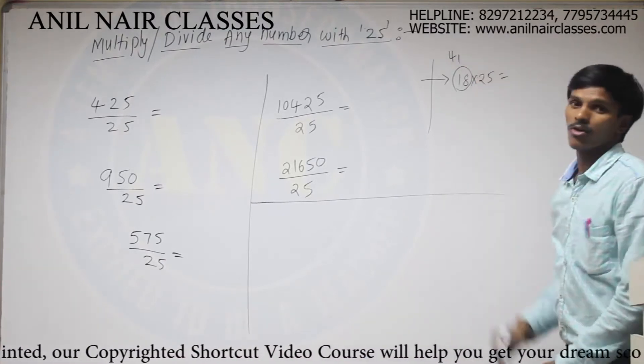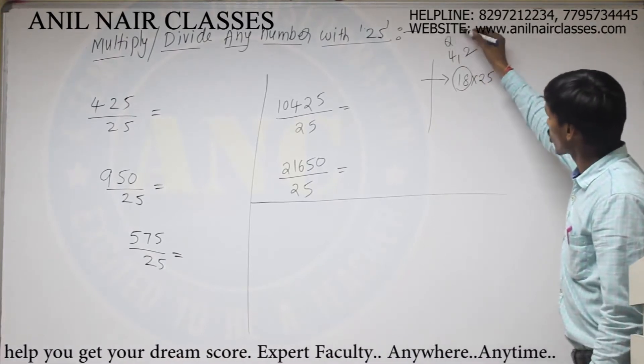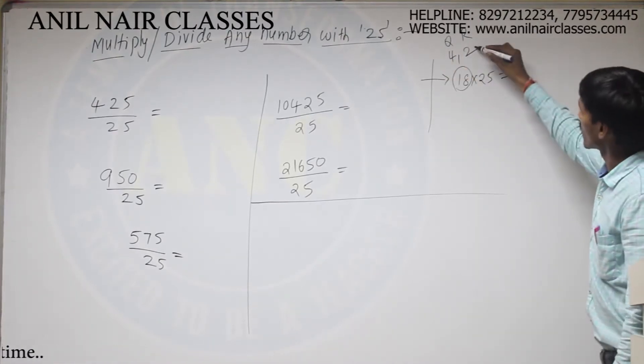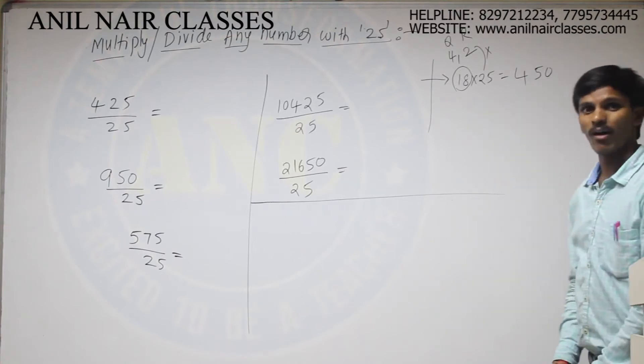It will get cancelled 4 times and the remainder will be 2. So, this will be the coefficient and this will be the remainder. Write the coefficient as it is 4. Multiply the remainder with 25. 450 will be the answer.